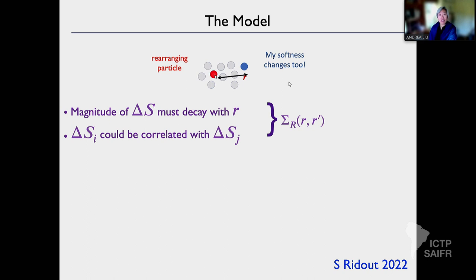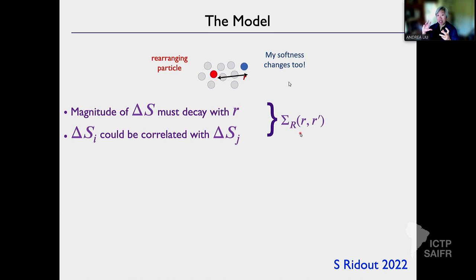The result is the following: the magnitude of the change of softness some distance away from the rearranging particle must decay with distance. So I have a rearranging particle at R and a spectator particle at R prime — I'll call the rearranging particle I and the spectator particle J. There's some kernel that tells you how the magnitude of the change of softness depends on that distance.